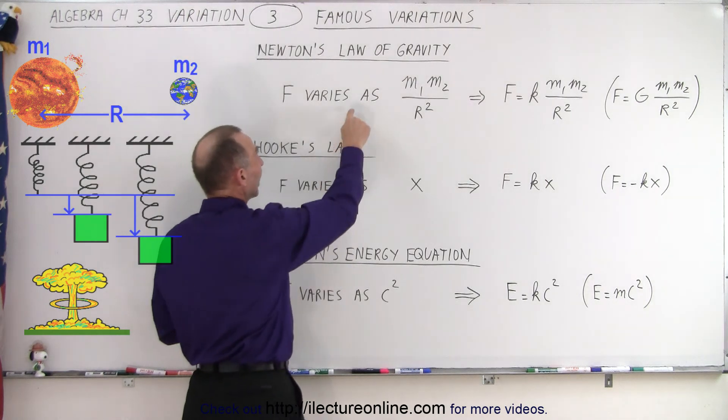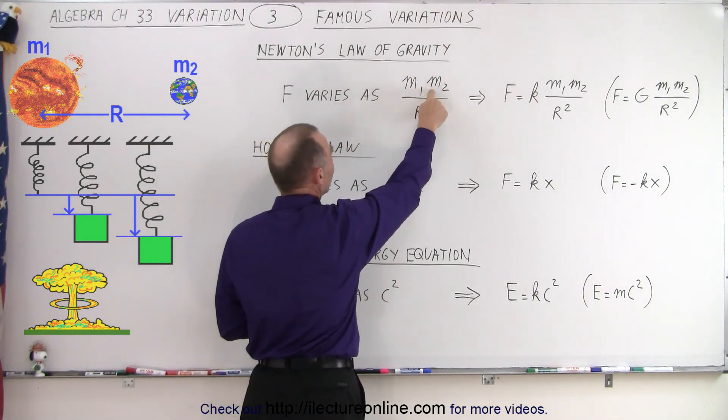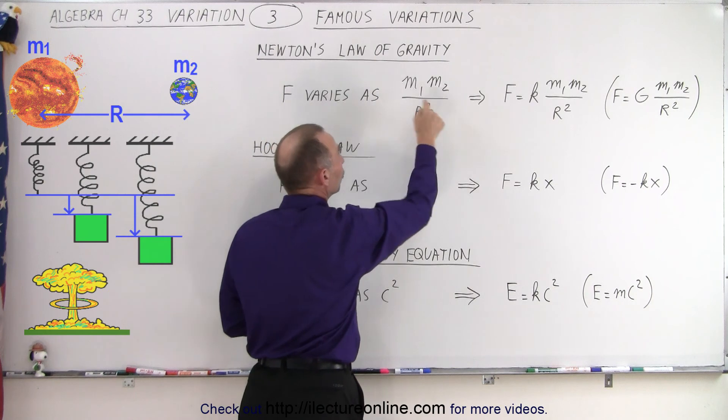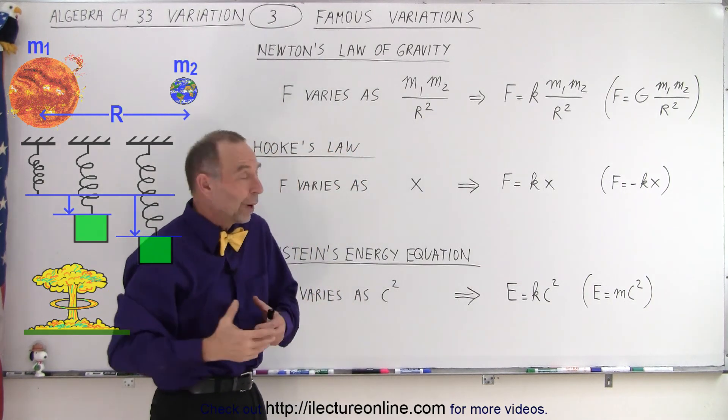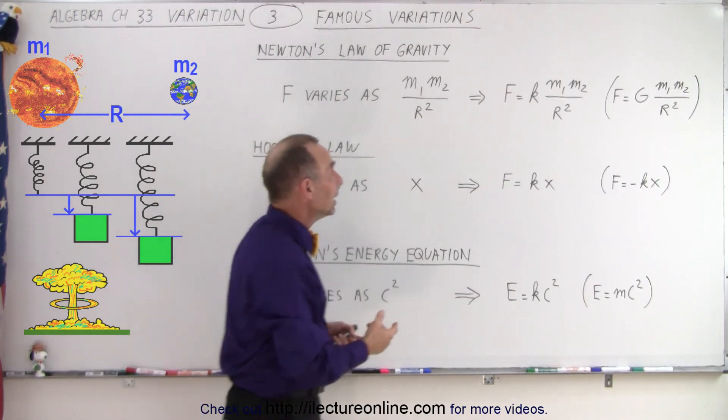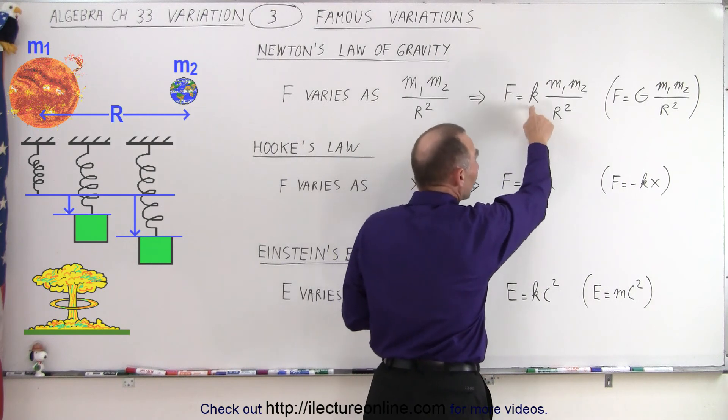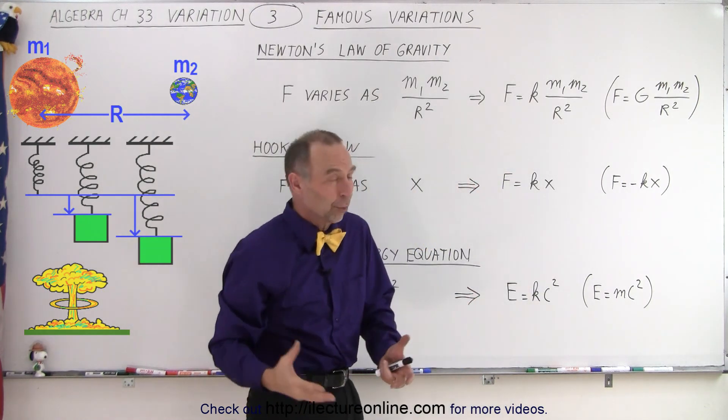So it varies directly as the product of the two masses and inversely as the distance squared. To write that into an equation, we need a constant. We call that the constant of variation or the constant of proportionality.